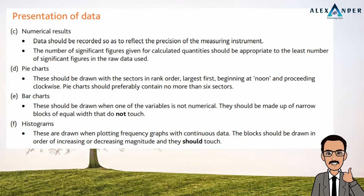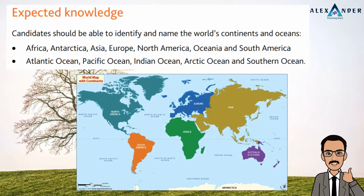You should be able to identify the seven continents and oceans on a map. The ability to identify major countries will be an advantage when describing geographical distribution on a map.